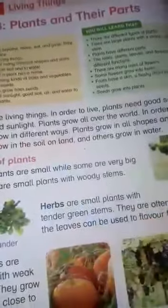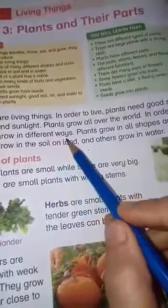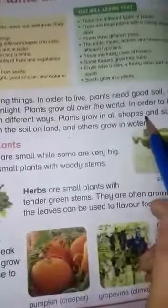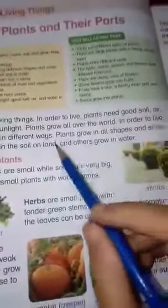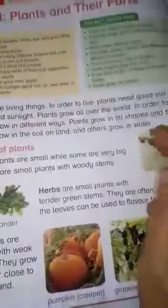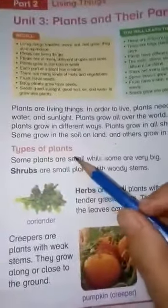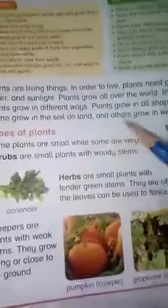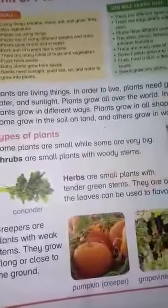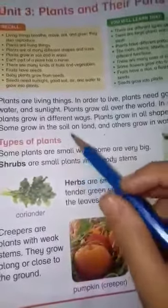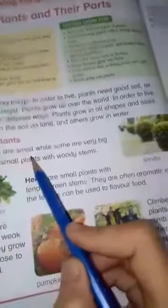Plants grow in different ways. Plants grow in all shapes and sizes. Some grow in the soil on land, and some plants grow in water. Plants grow in the soil, and some plants are small while environments vary across the world.